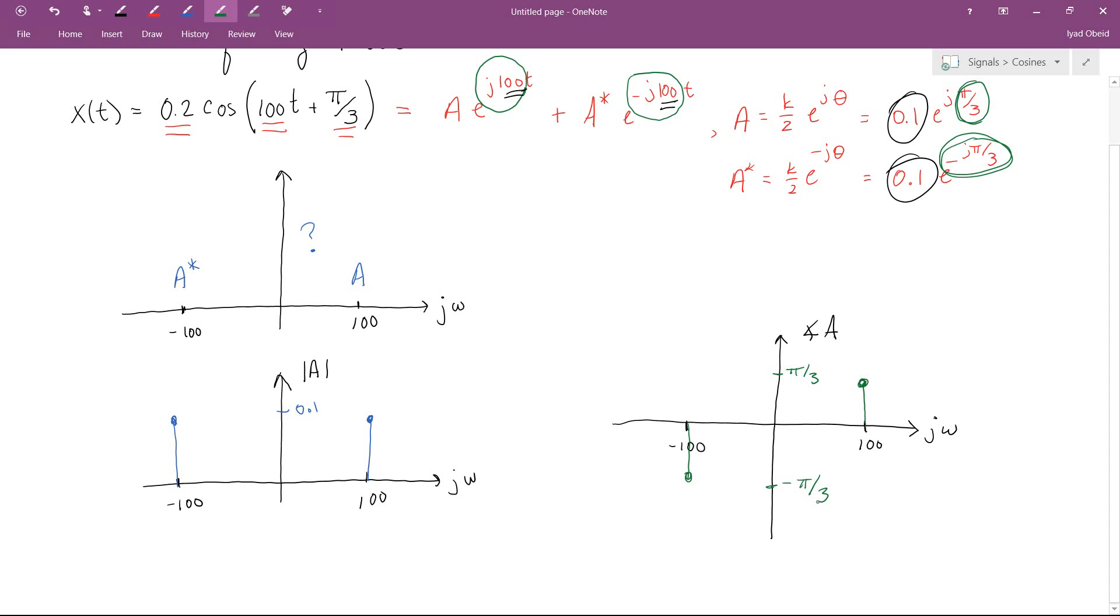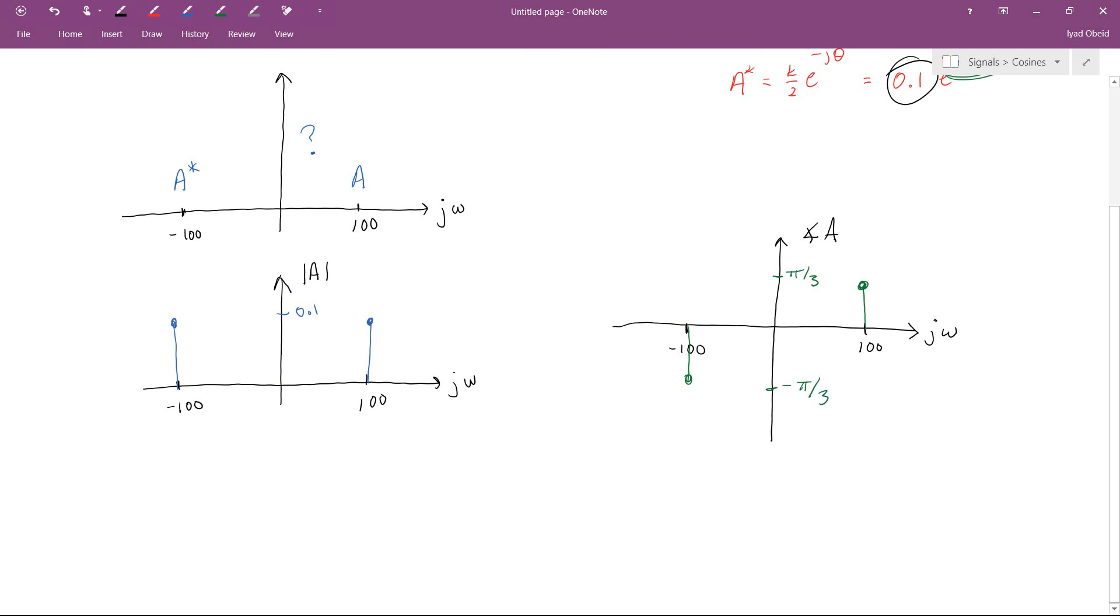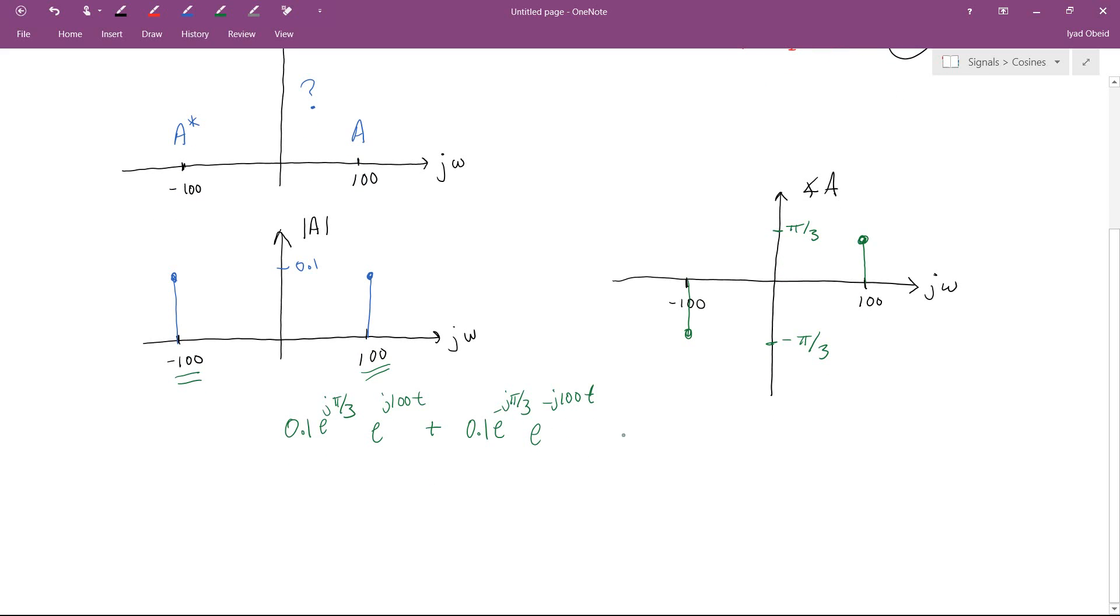Now, if I show you the two of these plots together, the magnitude plot and the phase angle plot, you now have all the information you need to rebuild your signal. So this tells you that you have an expression, a term that is e to the j 100t. And it also tells you that you have a term at e to the minus j 100t. And the plus 100t term has a magnitude of 0.1 and a phase angle of pi over 3. And the minus 100t term has a magnitude of 0.1 and a phase angle of minus pi over 3. And then because you have two sticks that are summed together, the answer is their sum.